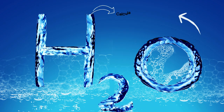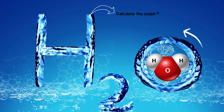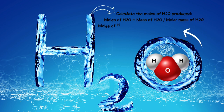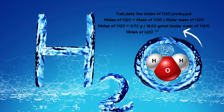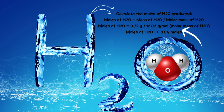Calculate the moles of water H₂O produced. Moles of H₂O equals mass of H₂O divided by molar mass of H₂O. Moles of H₂O equals 0.72 grams divided by 18.02 grams per mole — the molar mass of H₂O. Moles of H₂O equals 0.04 moles.